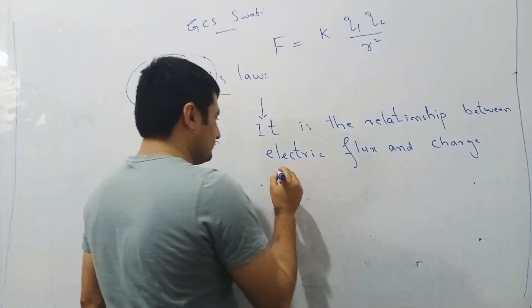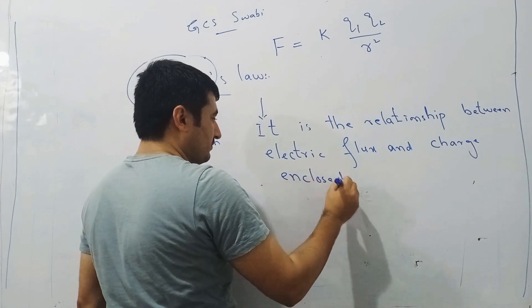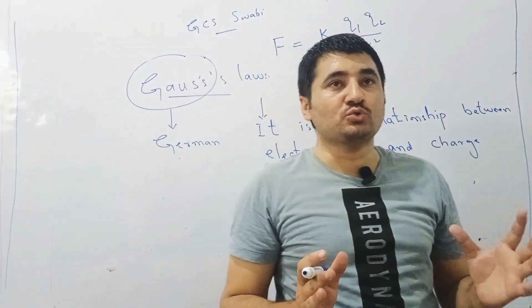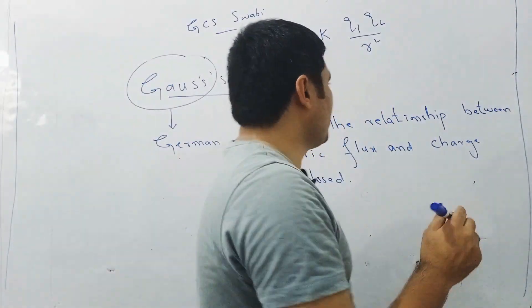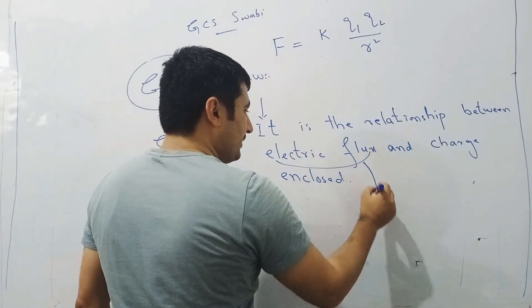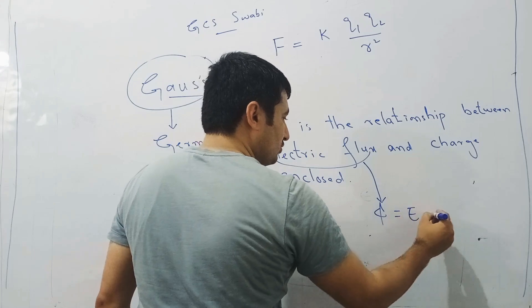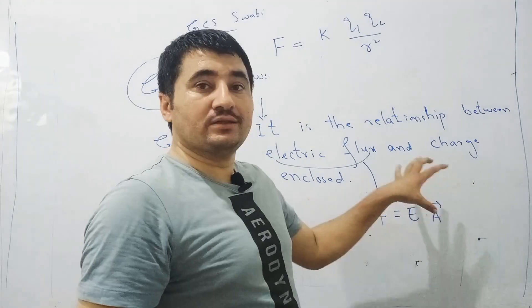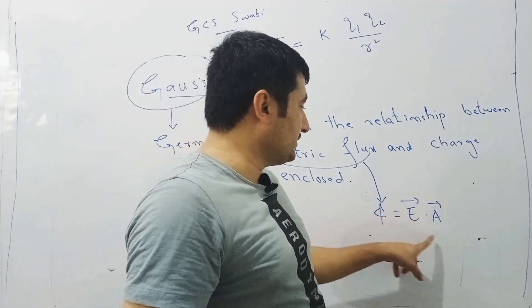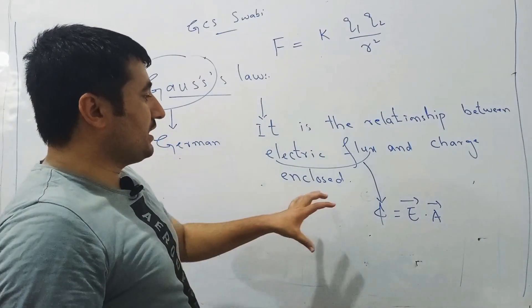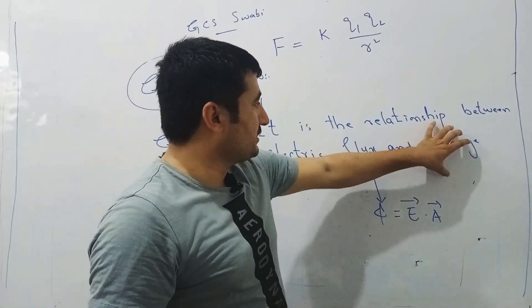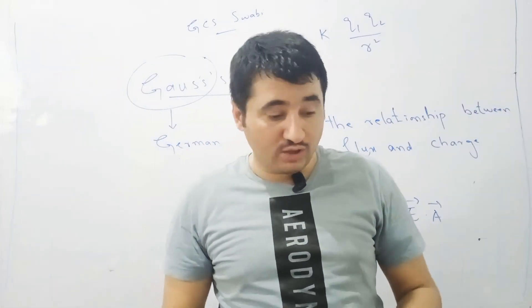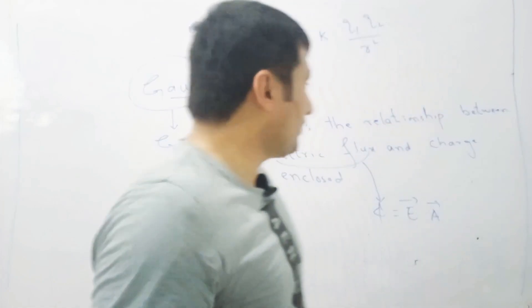Gauss's law is the relationship between electric flux and charge enclosed in any surface. Electric flux, represented by Φ, is equal to E·A, as we have studied in our previous lecture — it is related to the electric field lines and the area vector. Gauss's law gives you the relationship between the electric flux and the charge enclosed in a surface.